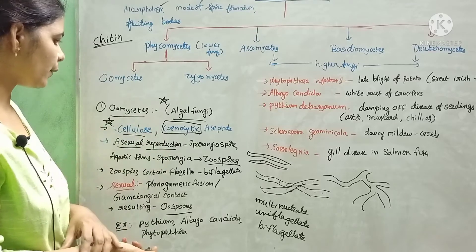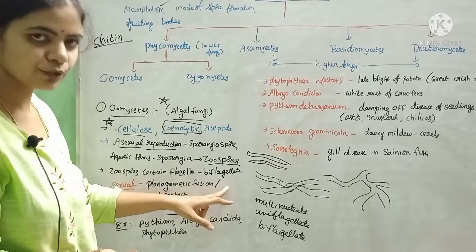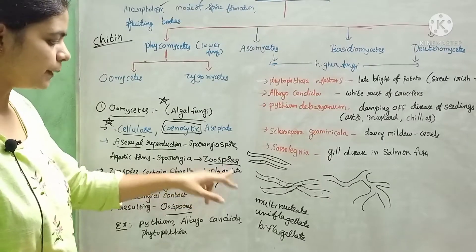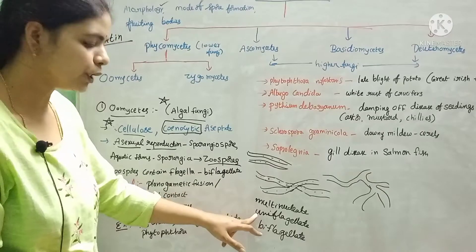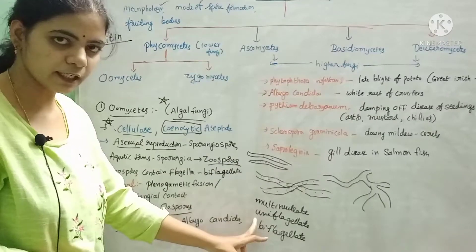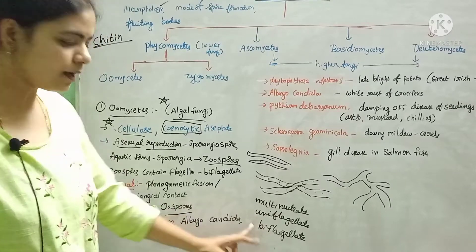These zoospores contain flagella for motility. These are mainly present in aquatic conditions. Hence, they require motility. Depending upon the flagella, they may be uniflagellate with single flagella, and some contain biflagellate condition with two flagella.